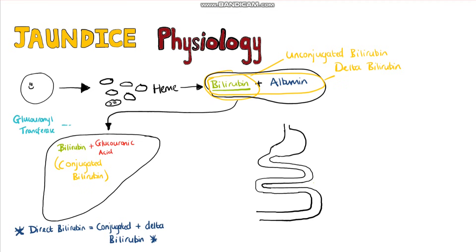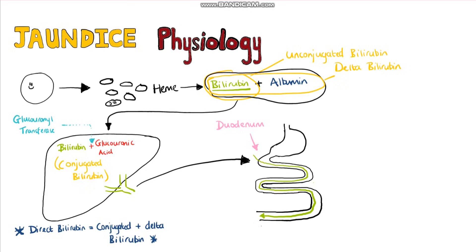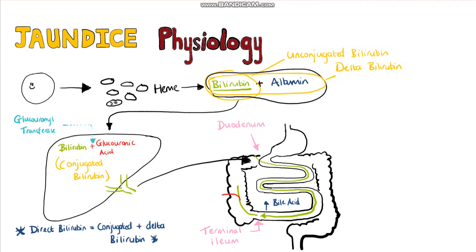The conjugated bilirubin is present in the bile and is secreted into the duodenum. From the duodenum, it travels through the small intestine up to the terminal ileum, where most of the bile acid is reabsorbed through the enterohepatic circulation, but conjugated bilirubin is not reabsorbed. It instead passes into the colon, where bacteria remove the glucuronic acid that was added in the liver and form urobilinogen, which is colourless, and which is then oxidised into stercobilin, which gives faeces its brown colour.